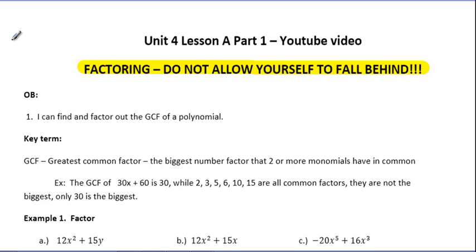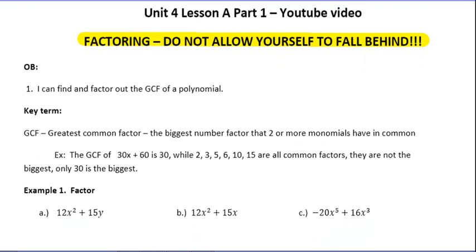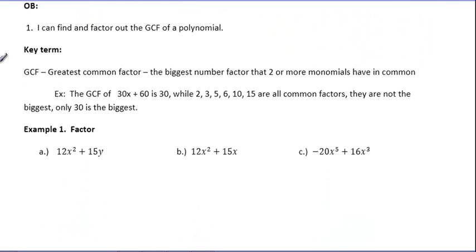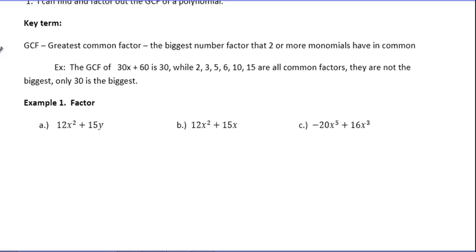So this is the first part. We're learning how to GCF factor. That's greatest common factor. When you're done, hopefully you're able to say that you can actually find and factor out the GCF. This is day one of what's going to be five or six days on factoring. Our key term is greatest common factor - that's the biggest factor of two or more monomials. In the example you see there, the numbers 30x and 60 have a lot of numbers that are common factors: 2, 3, 5, 6, 10, 15 are all common factors. But only 30 is the biggest. That's what we call the GCF.